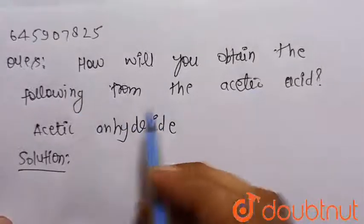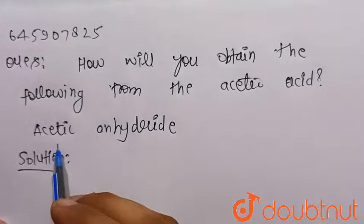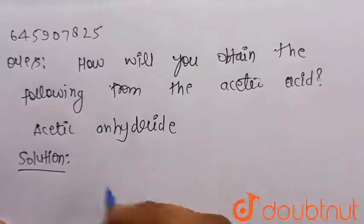How will you obtain the following from the acetic acid? So we have to obtain the acetic anhydride from the acetic acid.